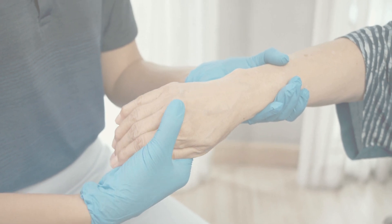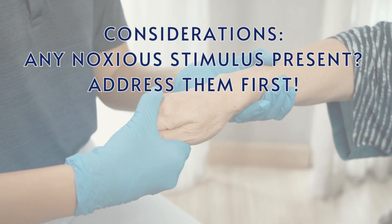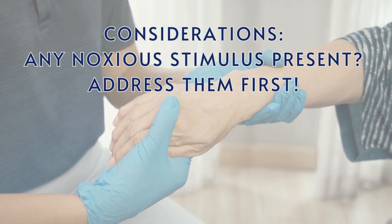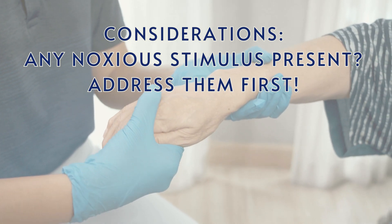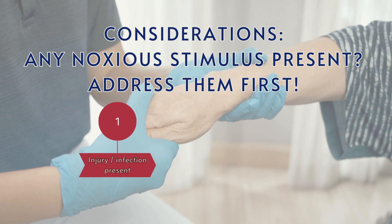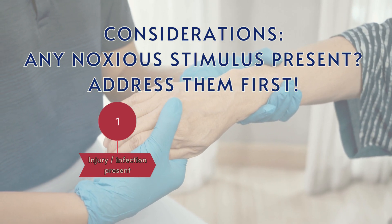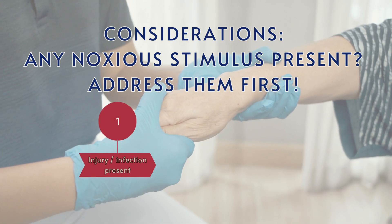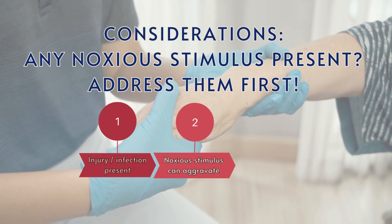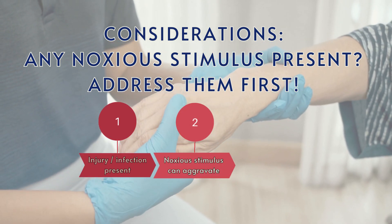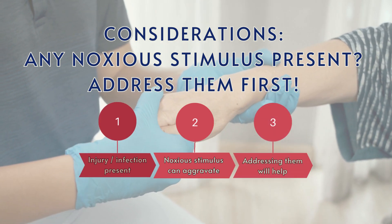Before starting any treatment, it's good to consider if there's any noxious stimulus present that is aggravating the spasticity. For example, if there's an injury or infected ulcer, this may be causing noxious stimulus for the patient which can be increasing the spasticity or making it more painful. Hence, removing or addressing these causes will bring down the spasticity.